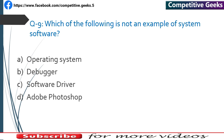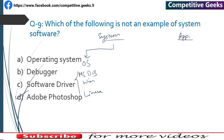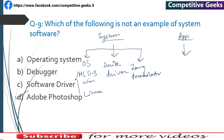Number 9: Which of the following is not an example of system software? Operating system, debugger, and device driver are system software. The answer is D — Adobe Photoshop, which is application software. System software includes operating systems like MS-DOS, Windows, and Linux, as well as device drivers (for mouse, keyboard, printer, scanner) and language translators. Application software performs specific tasks for end users — for example MS Word, MS Excel, and browsers like Chrome and Firefox.